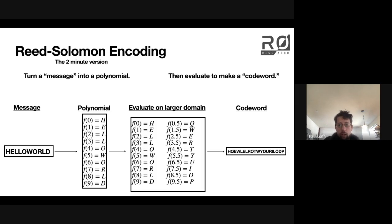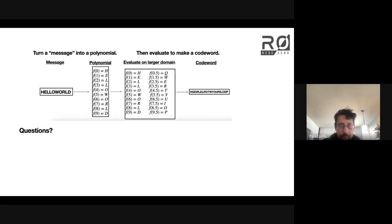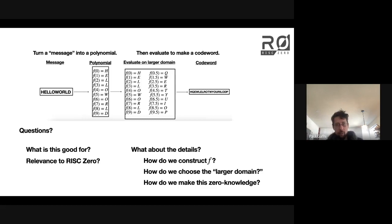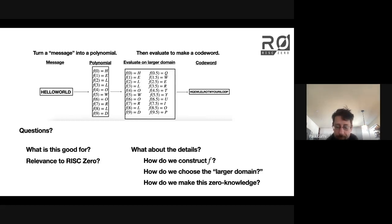If part of this feels fuzzy, I want to invite questions now because we're going to be assuming this as understood as we move forward. There are some natural questions: what is it good for, what's the relevance in RISC Zero, how do we find this polynomial, how do we choose the larger domain, and what change needs to be made to make this compatible with a zero-knowledge system. I'm going to proceed and try to answer these questions during the rest of the presentation.